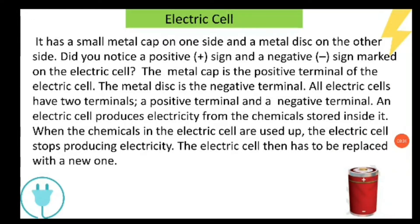How does a cell produce electricity? Inside the cell, there are chemicals stored in which electricity is generated. When all the chemicals are finished, the cell will stop working — that means it will stop producing electricity. At that time, we replace it with new cells.